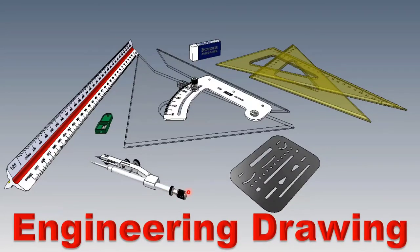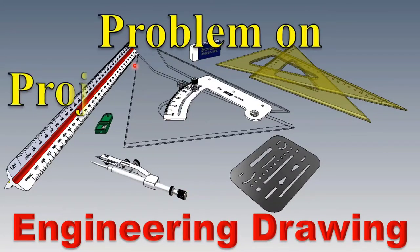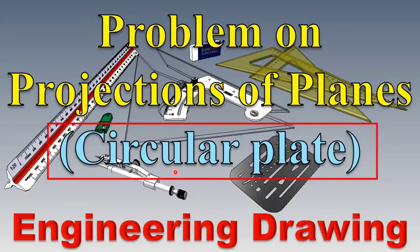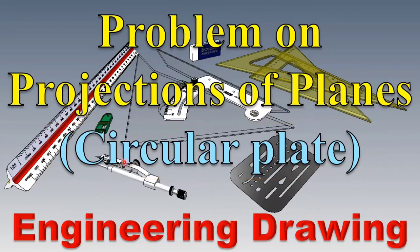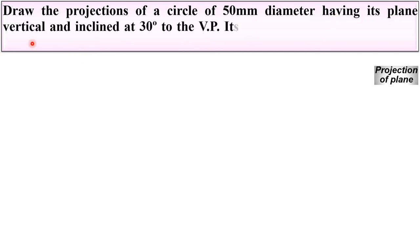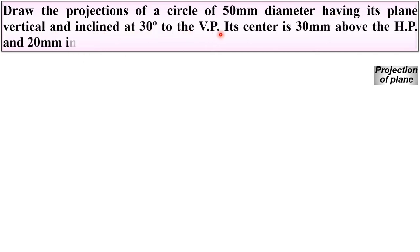Welcome to my engineering drawing playlist. Today I will be explaining a problem on projections of planes related to a circular plate — that means here the plane is a circle. Let us see first the description of the given problem: draw the projections of a circle of 50 mm diameter having its plane vertical and inclined at 30 degrees to the VP.